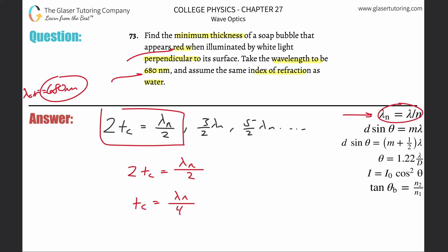Using the formula in the upper right: the wavelength in the soap equals the wavelength in a vacuum divided by the index of refraction of the soap. The wavelength in a vacuum is essentially the same as in air, since both have an index of refraction of approximately 1. So we divide by the index of refraction of the soap.